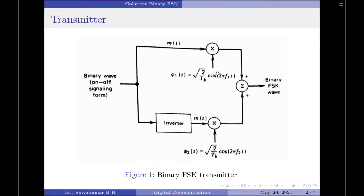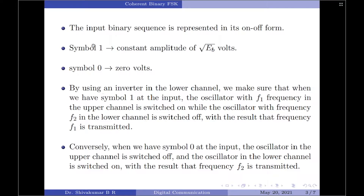To generate the binary FSK signal, we will use the scheme shown in figure one. Here the input binary sequence is represented in its on-off form, which is also called the unipolar signaling scheme, where symbol one is represented by a constant amplitude pulse of plus root Eb, and symbol zero is represented by zero volts. Since we have only one polarity — positive polarity — this is called the unipolar signaling scheme.